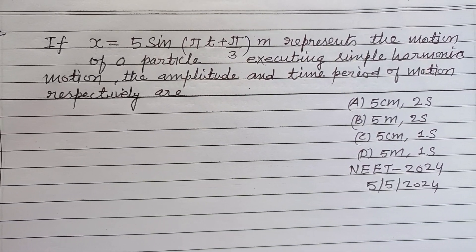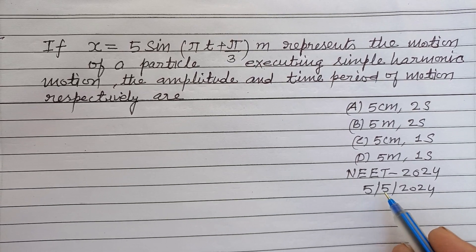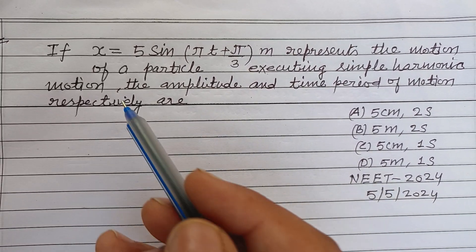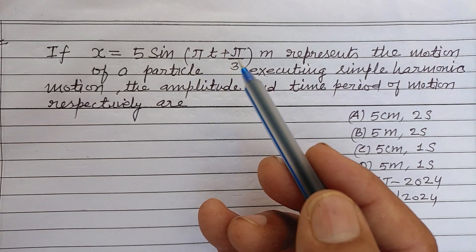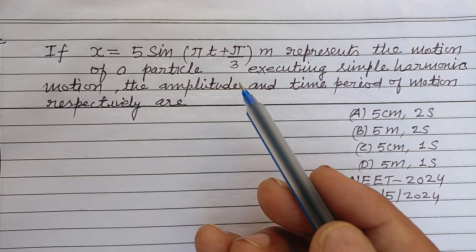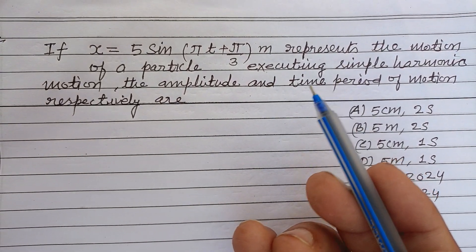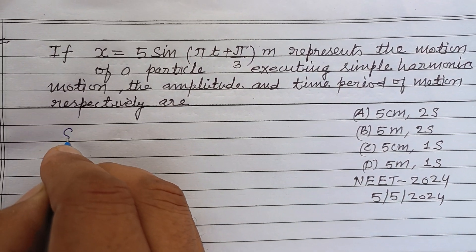Hello viewers, warm welcome to this YouTube channel. Question from NEET 2024 held on 5 May 2024. If x equals 5 sin(πt + π/3) meter represents the motion of a particle executing simple harmonic motion, the amplitude and time period of the motion respectively are.